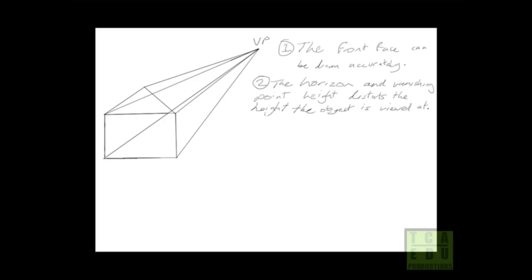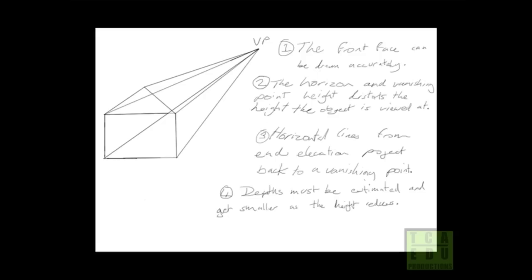The next step in completing our previous example is to decide how far back the building will go. This highlights our third rule: the horizontal lines from the end elevation project back to the vanishing point. And rule four: the depth must be estimated and gets smaller as the height reduces.